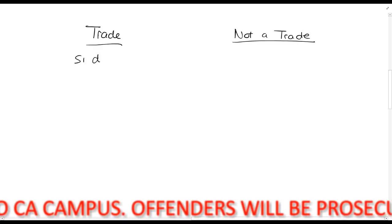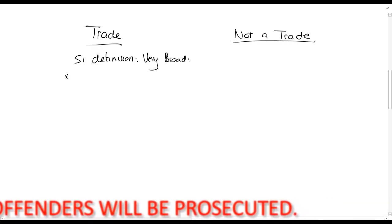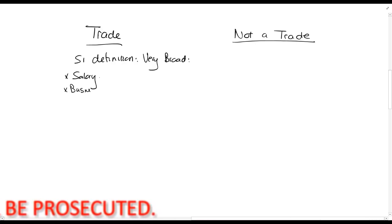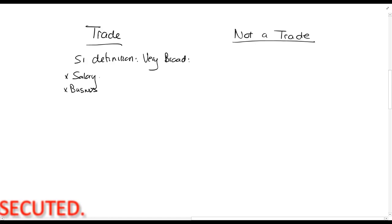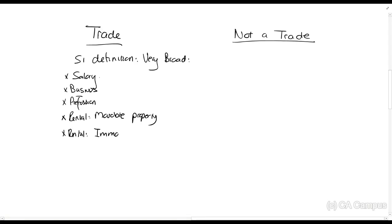A trade has a section 1 definition and it's very broad. It includes things like salary — so your job is one — business, profession, and occupation. So if you're an auditor, you're carrying on a trade, even if you're just working for someone. I'm also going to include rental of immovable property. So if you rent out a boat or immovable property, these are all trades.